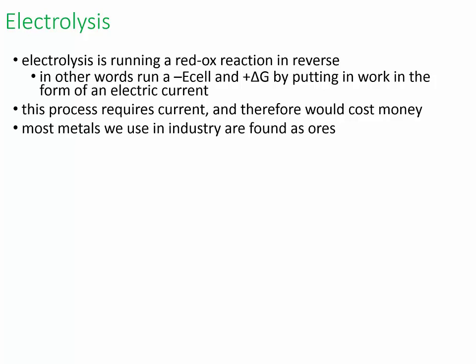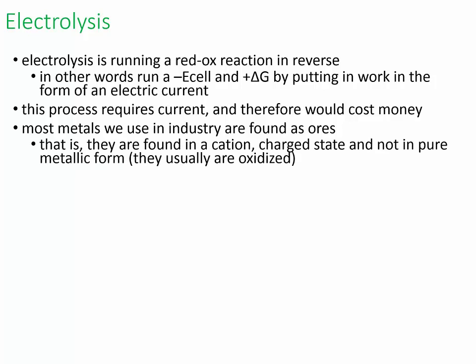Most metals used in industry are found as ores — they're found in their charged cation form, not in pure metallic form. Unless it's a precious metal like silver, gold, or platinum, you could find those in their reduced elemental form. But most metals require processing and energy input to make the reactions go in reverse.